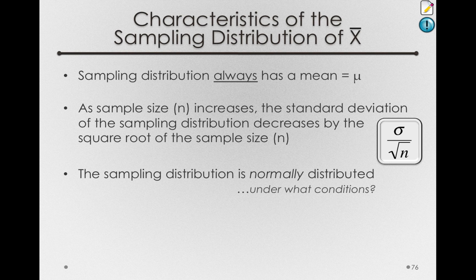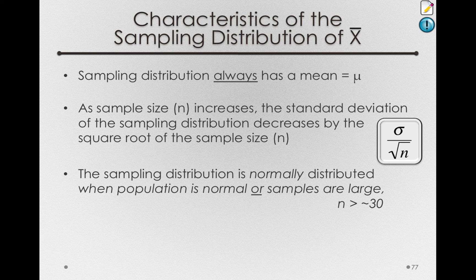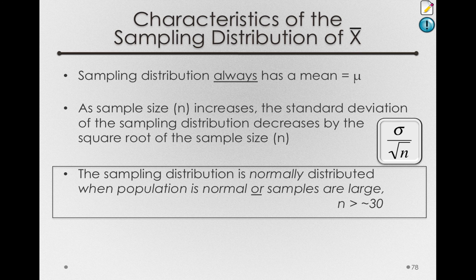Going back to our characteristics, the sampling distribution is normally distributed under certain conditions: when the population is normal — which means every sampling distribution, no matter what the size, will be normal — or when samples are large. A good rule of thumb is having a sample size greater than about 30. But notice that is not always the case: when we had a very skewed population, sometimes it takes larger sample sizes than that. When we have a non-normal population and sample sizes above about 30, we can be relatively sure that the sampling distribution of the mean is normally distributed.